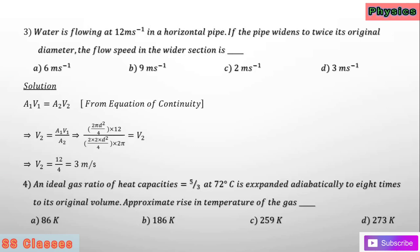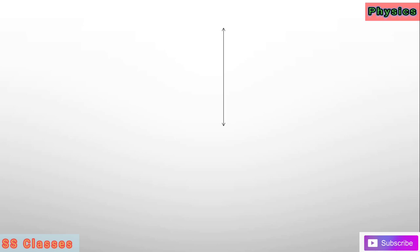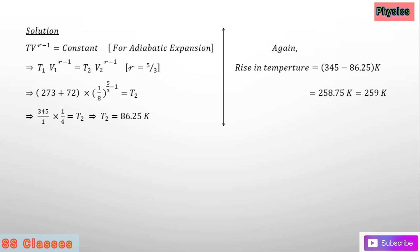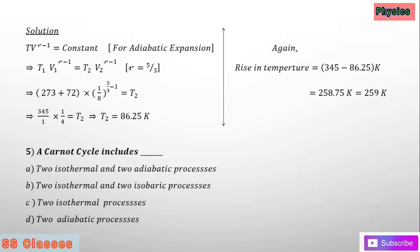An ideal gas with ratio of heat capacities γ = 5/3 at 72 degrees is expanded adiabatically to 8 times its original volume. The approximate rise in temperature is 259 Kelvin — option C is the answer. Remember for adiabatic expansion: T V^(γ−1) = constant. So T1 V1^(γ−1) = T2 V2^(γ−1), substitute values to get T2 = 86.25 Kelvin.